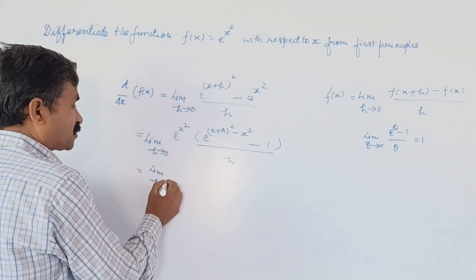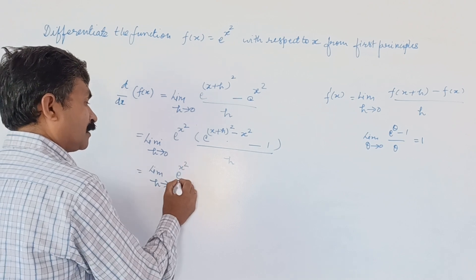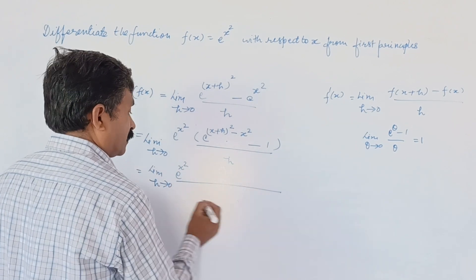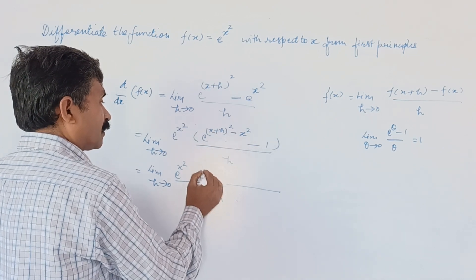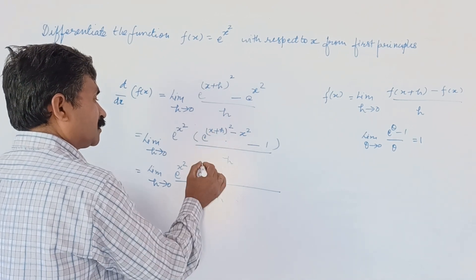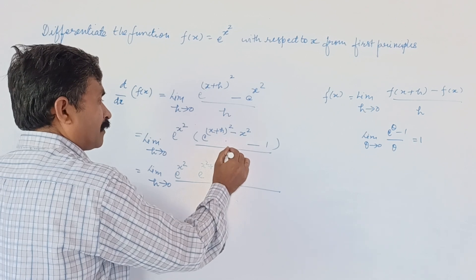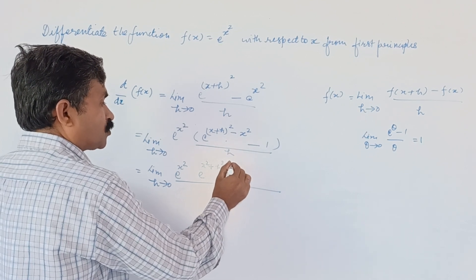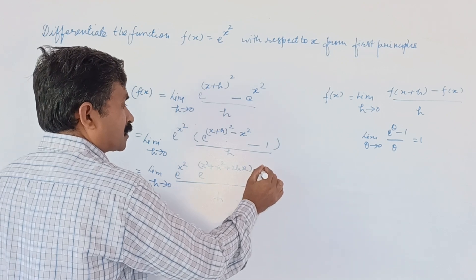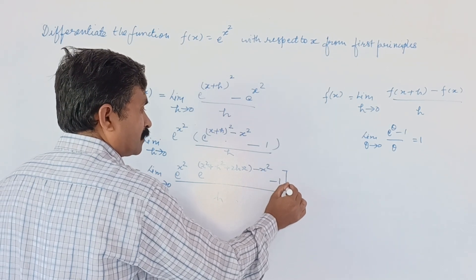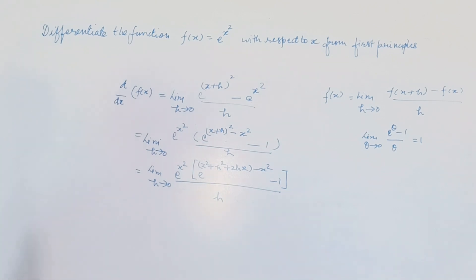Taking limit h tends to 0, e raised to the power x squared. Now, e raised to the power — this is x squared plus h squared plus 2 times hx — minus x squared, and minus 1. This is the value we are getting.